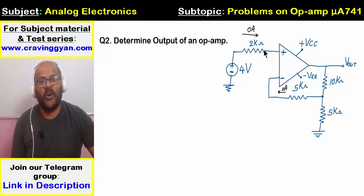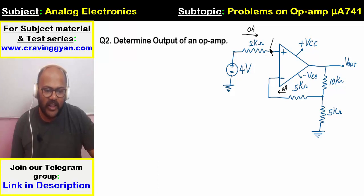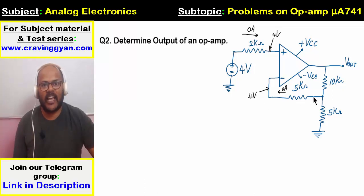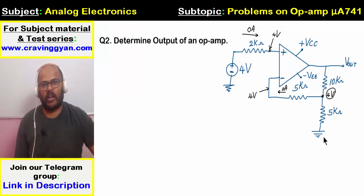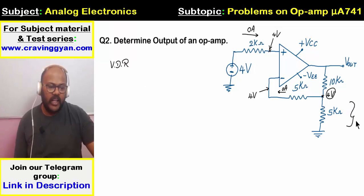Since no current flows through the 2 kilo ohm resistor, it's treated as a redundant element — the voltage drop across it is zero. So this potential is at 4 volts, and similarly the inverting potential is also at 4 volts. The current through the 5 kilo ohm is again zero, so the potential there is also 4 volts.